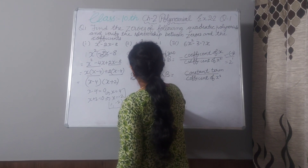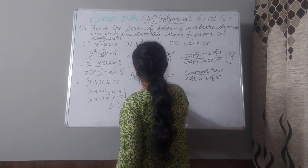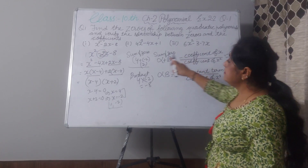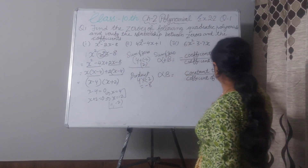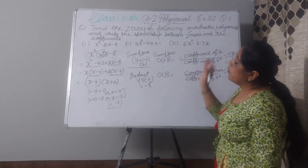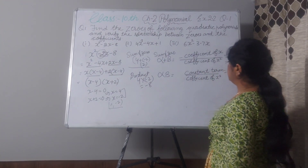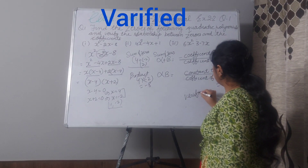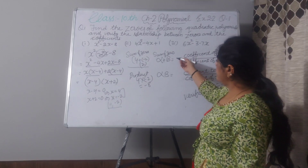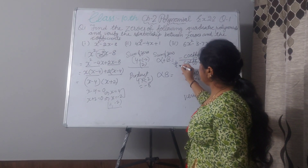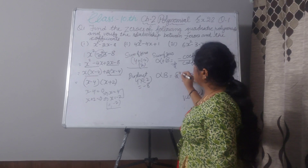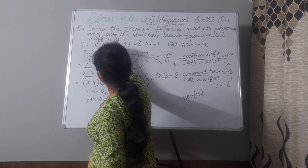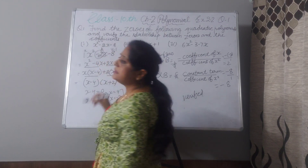Product: 4 multiplied by minus 2 gives minus 8. And here, constant term is minus 8 and coefficient of x² is 1. So c/a equals minus 8 over 1 equals minus 8. Verified. In summary, learn the formula: sum of zeros equals minus b by a, and product of zeros equals c by a, where a is the coefficient of x², b is the coefficient of x, and c is the constant term.